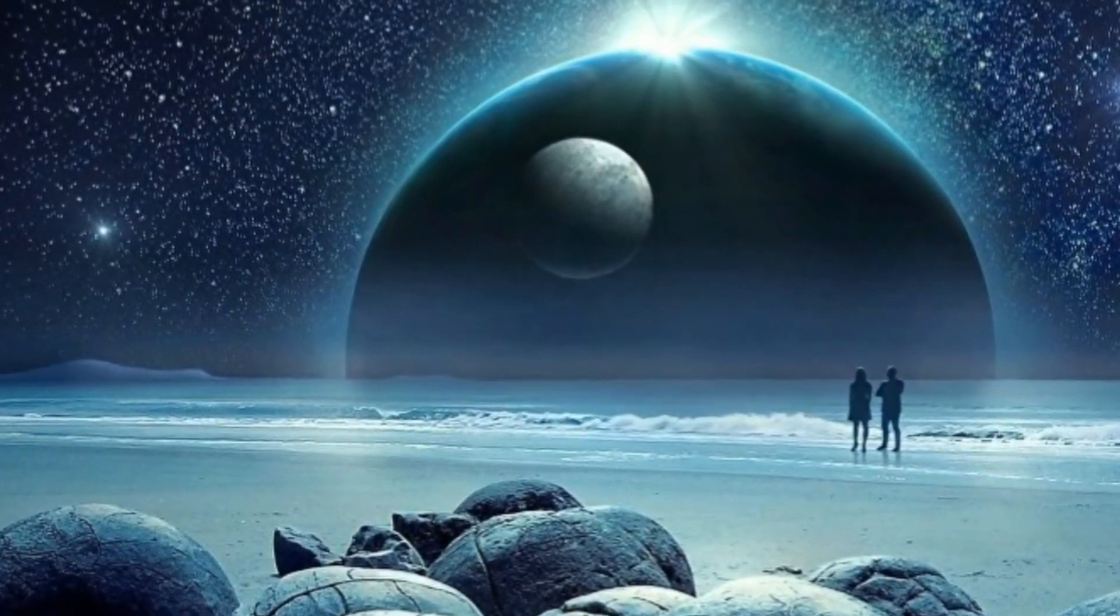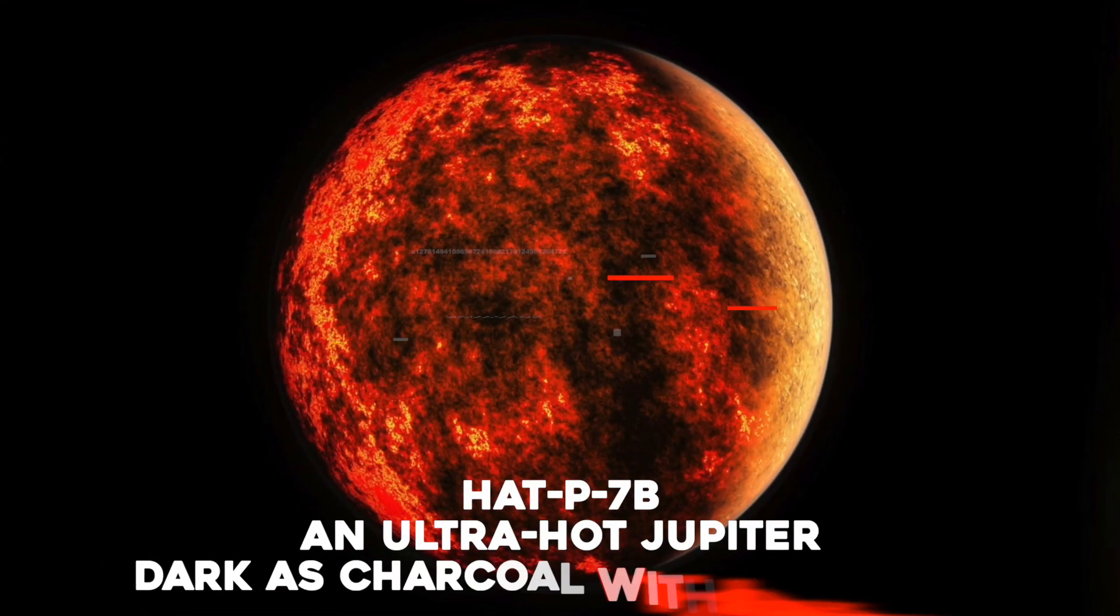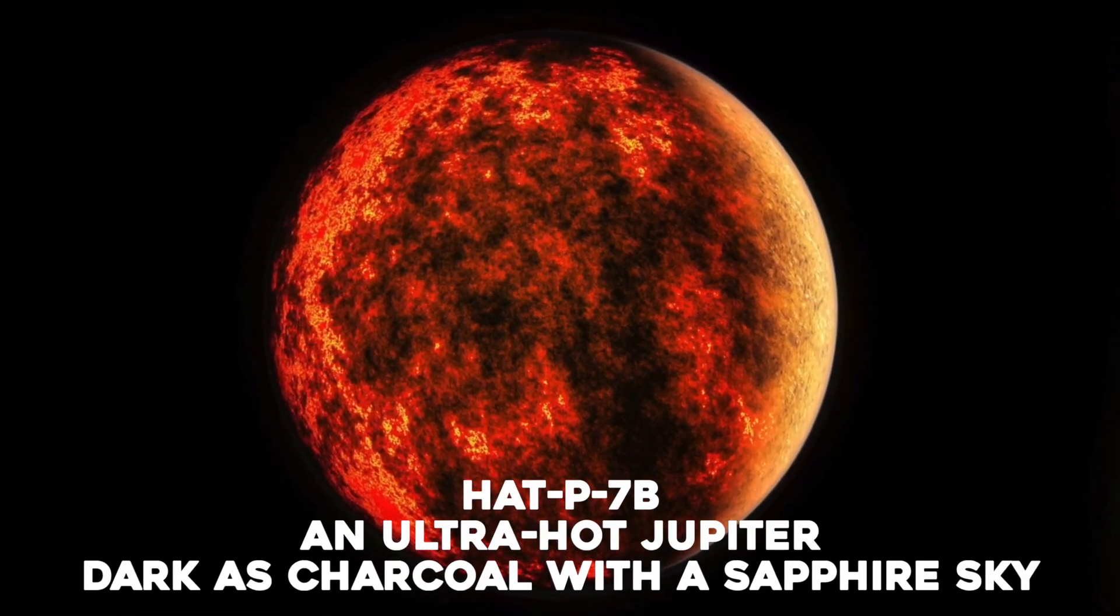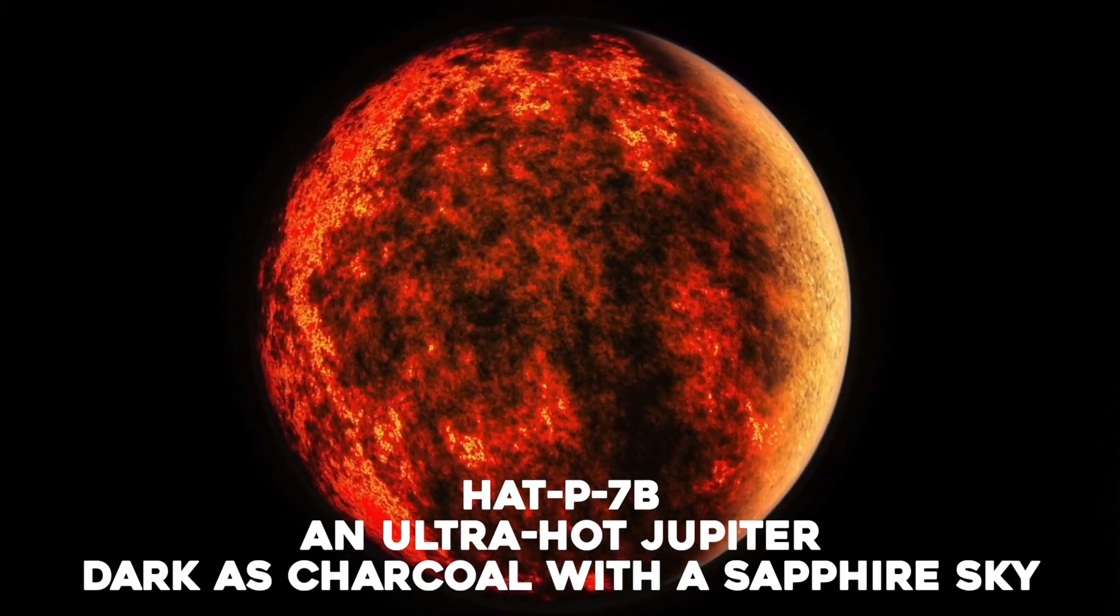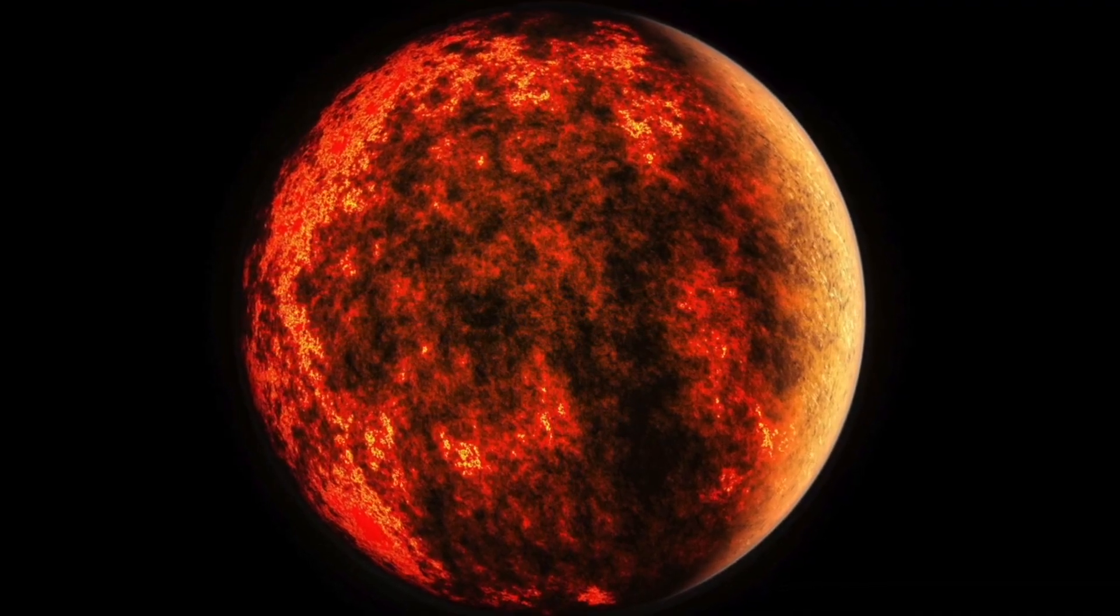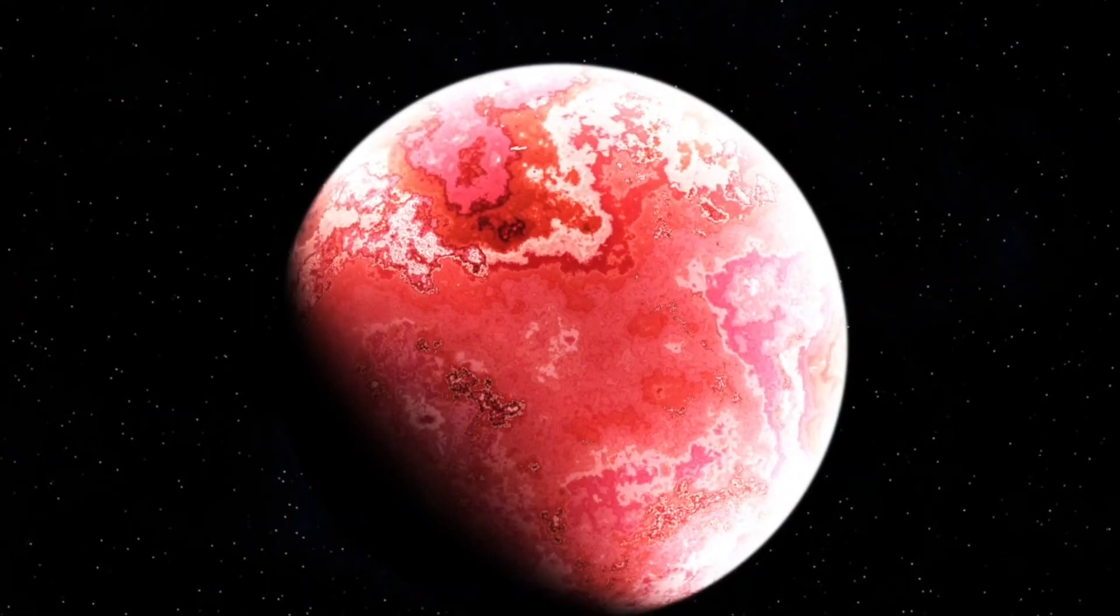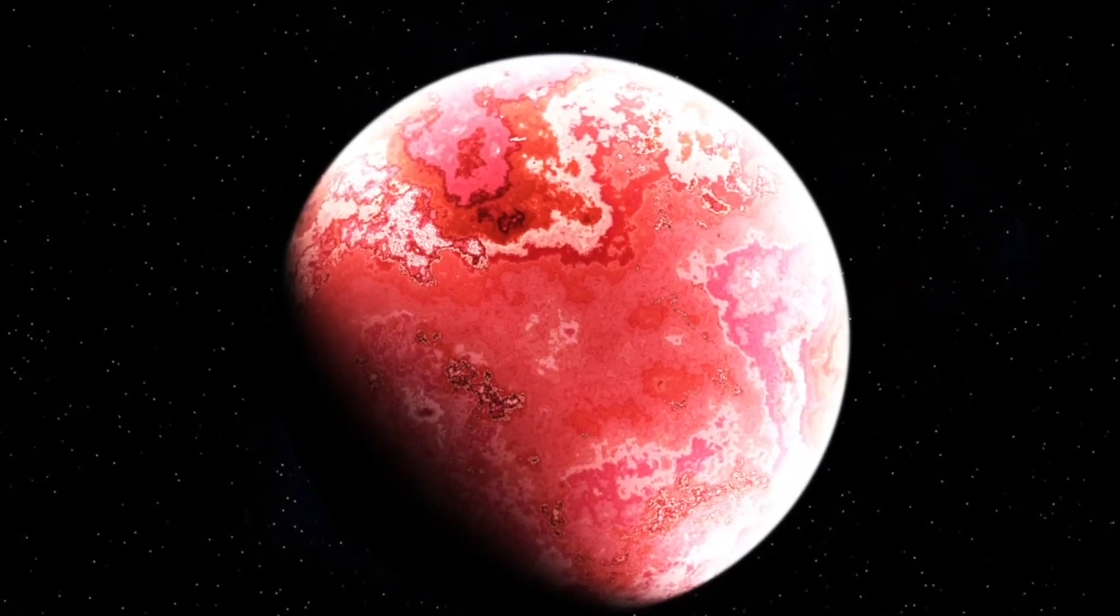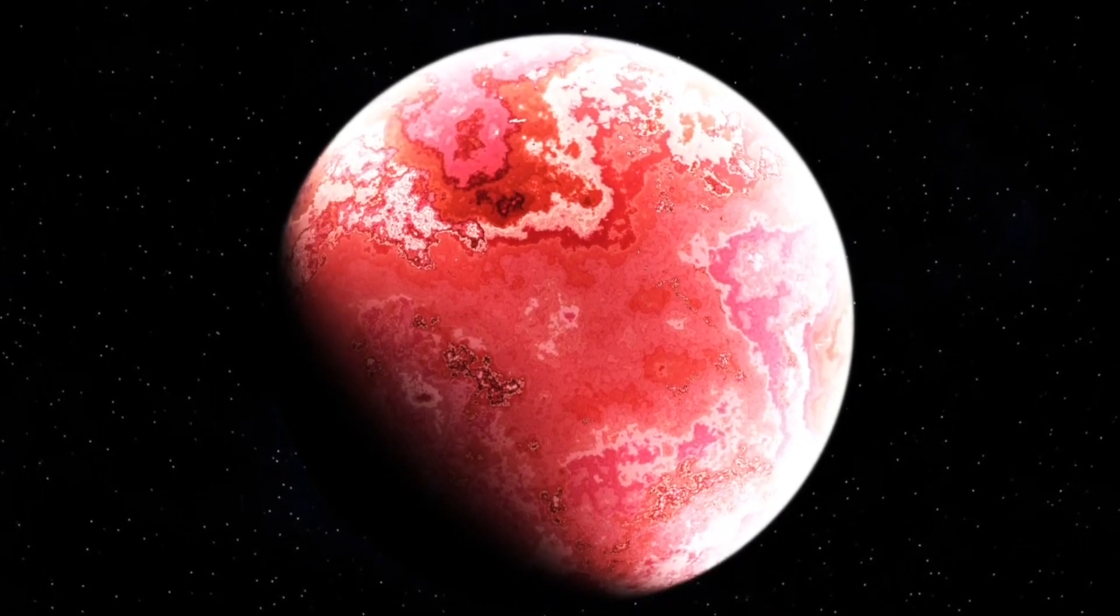HAT-P7b – An ultra-hot Jupiter, dark as charcoal with a sapphire sky. HAT-P7b is larger than Jupiter, with an orbital plane tilted 108 degrees relative to its host star, meaning it's almost in a polar orbit. It orbits the star so close that a year on this world is less than three days.